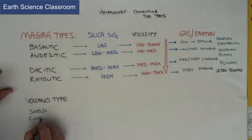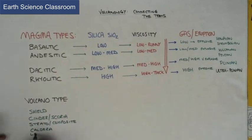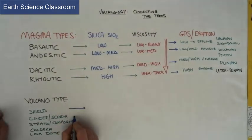Then we can link up the volcano type which is the shield and cinder and scoria or cinder ash cone, strato or composite, caldera, and lava dome. So the six main types of volcanoes we can link up with these characteristics and also with the ones above.